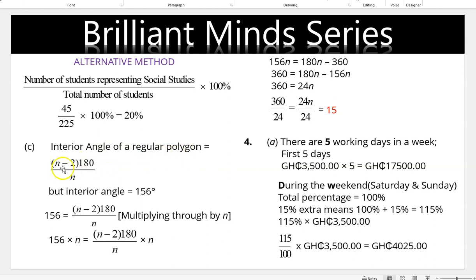The interior angle of a regular polygon is given by (n − 2) × 180 / n. We are given the interior angle as 156°, so we equate: 156 = (n − 2) × 180 / n. Multiplying through by n and simplifying: 156n = 180n − 360. Transposing gives 360 = 24n, so dividing both sides by 24 gives n = 15 sides.